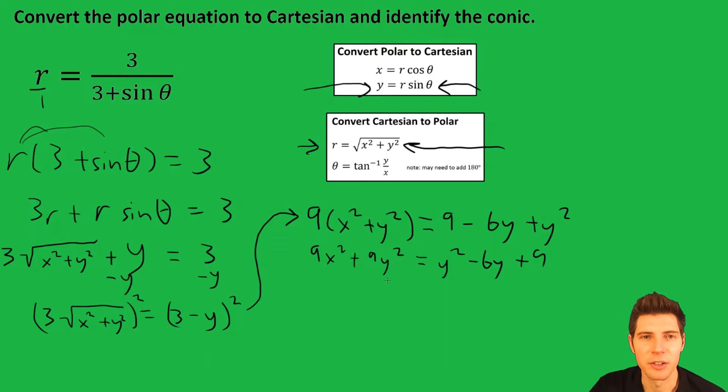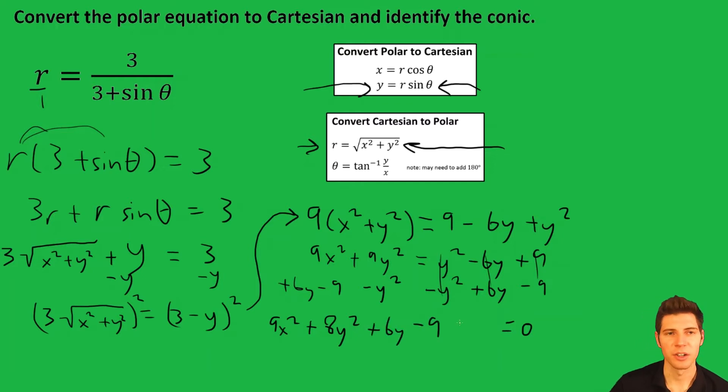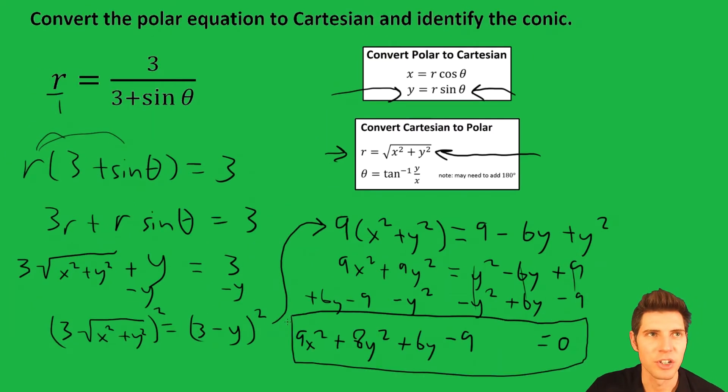Now let's set everything equal to zero. Let's subtract y squared, add the 6y, and subtract 9 on both sides. This stuff all becomes zero on this side. And on this other side, it's 9x squared plus 8y squared, because 9y squared minus y squared, plus 6y minus 9, and we say it equals zero. That's the answer to the question. We converted it to Cartesian form.